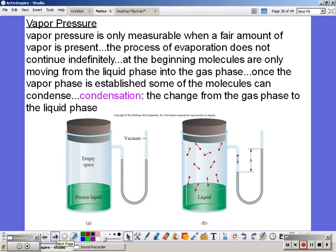Vapor pressure is only measurable when there's a fair amount of vapor present. The process of evaporation doesn't continue indefinitely. At the beginning, you have just your liquid, and those molecules are moving into the gas phase. Once the vapor phase is established, some of the molecules then can condense back down. So vapor pressure really is the pressure that the gas is exerting on the surface of the liquid.